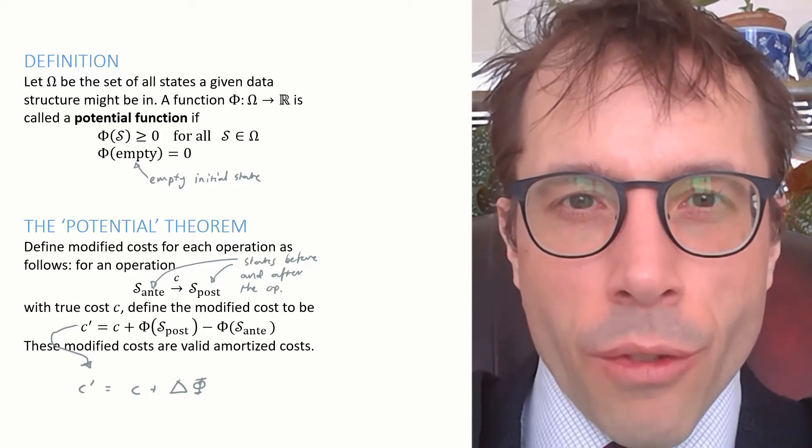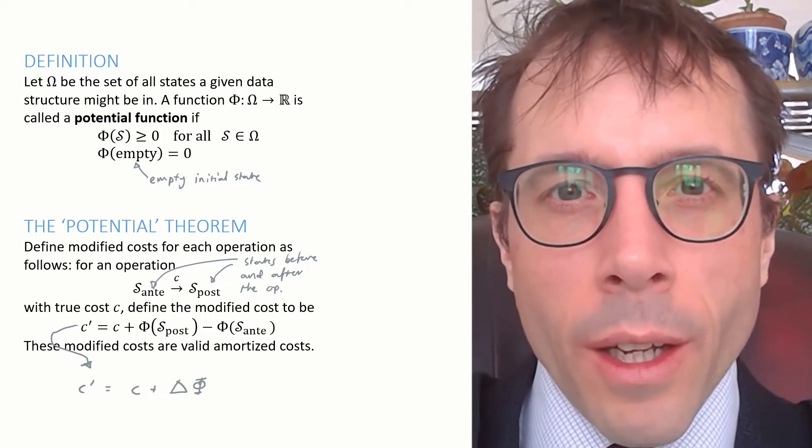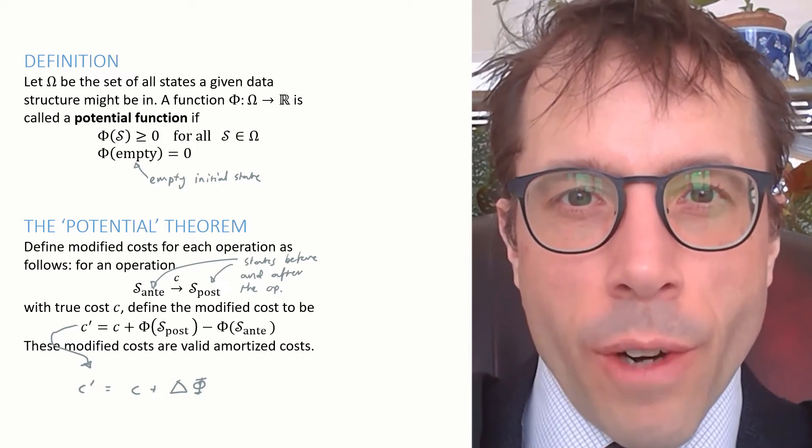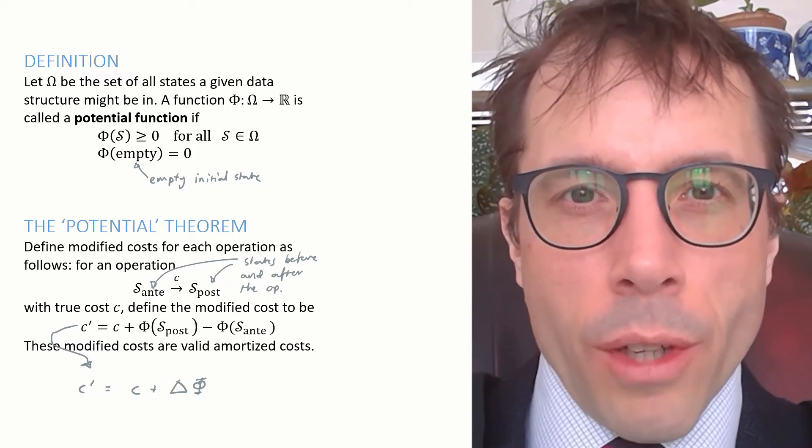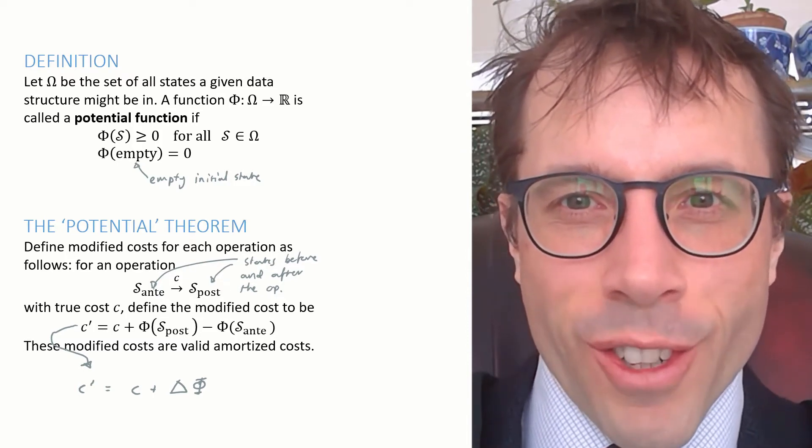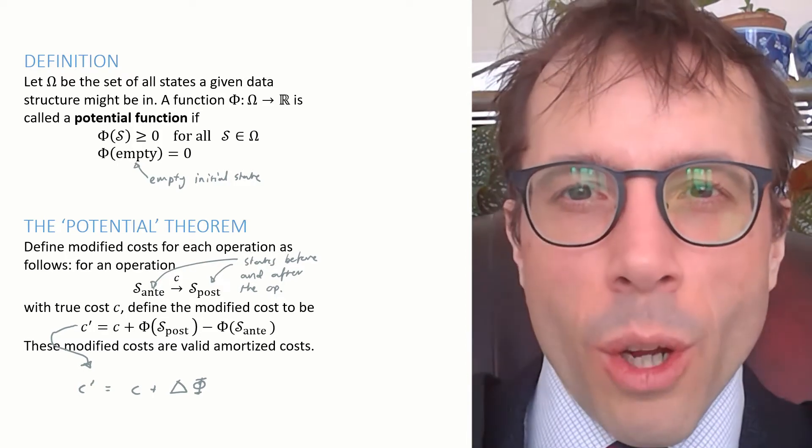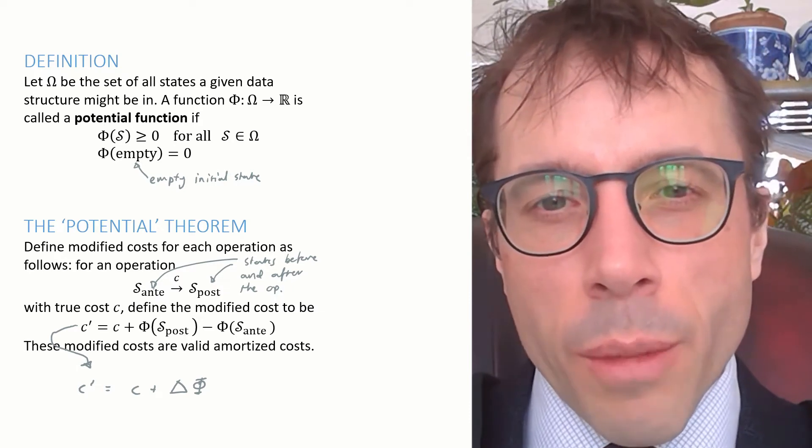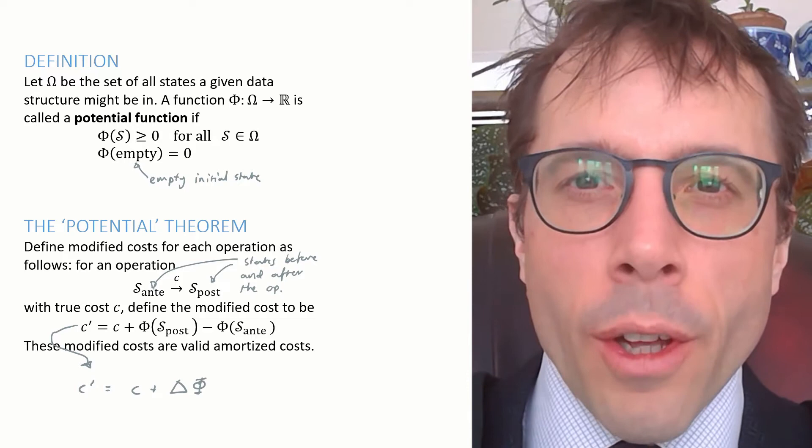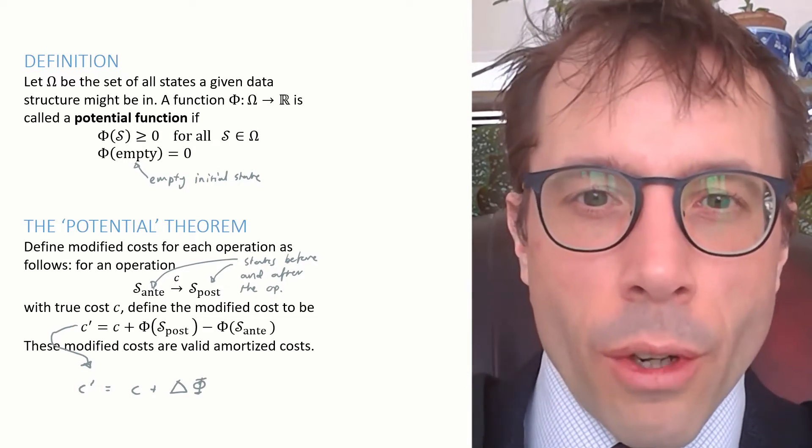This theorem gives us a simple crank the handle way to obtain amortized costs. We simply stick in the potential function and out-prop the amortized costs. But this begs the question, how do we invent a potential function? What I hope you'll see from this video is that it's usually pretty intuitive to invent a sensible potential function, much easier than it would be to invent amortized costs from scratch.